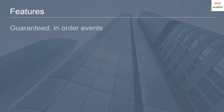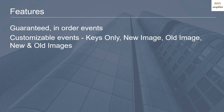A little bit about features. There are guaranteed in-order events. The events emitted are customizable — there are a few types. Keys only: any time a modification happens you only get the key that changed. New image: when there's a modification you only see what the new version of the record looks like, not the original. Old image: similar, but you only see the original reference object. And new and old: you can see what it was before and what it is now, and do a diff to figure out what changed. Depending on your application, you can pick which type of event works best for you.